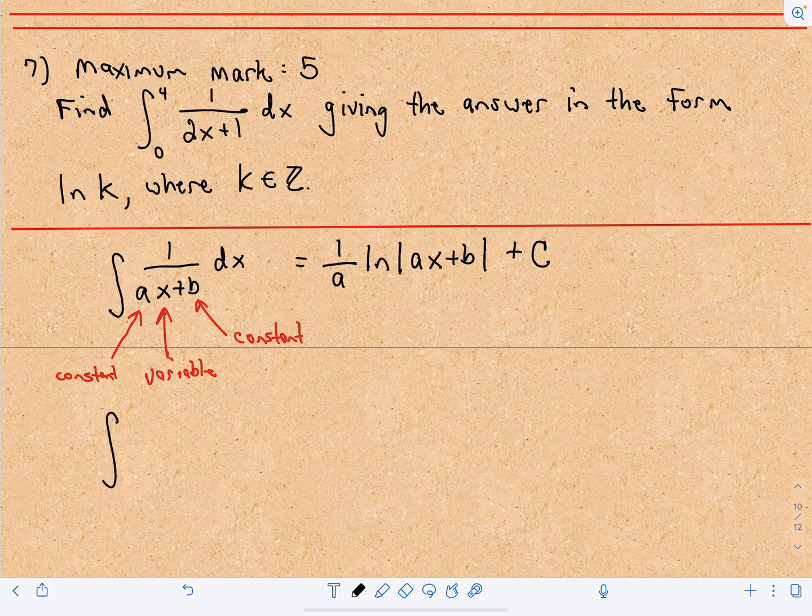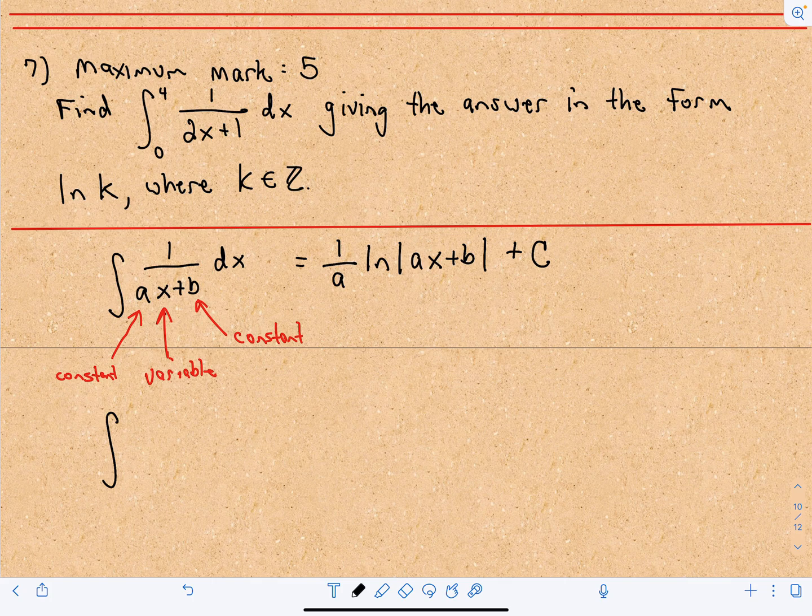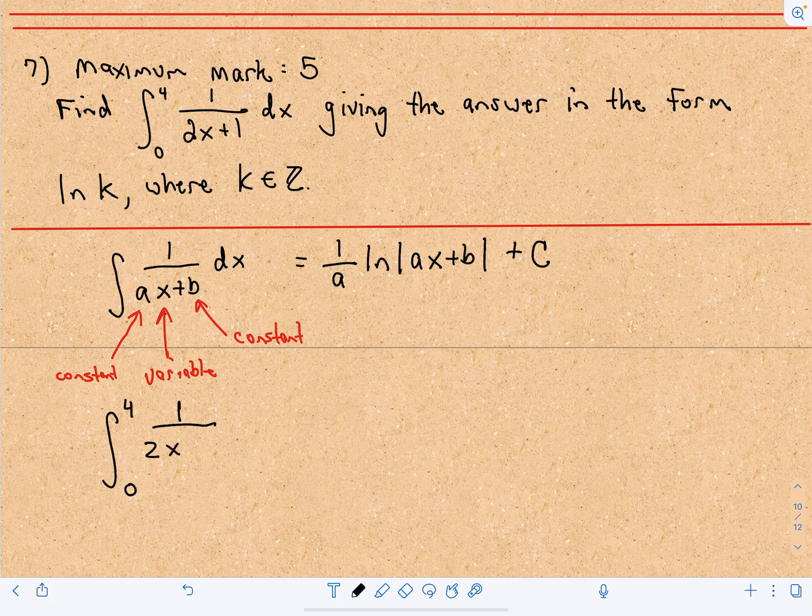Now let's look at this one. I'm going to do an indefinite integral first - well, let's just keep it definite. It doesn't really matter in this case. So from 0 to 4, 1 over 2x plus 1 dx.